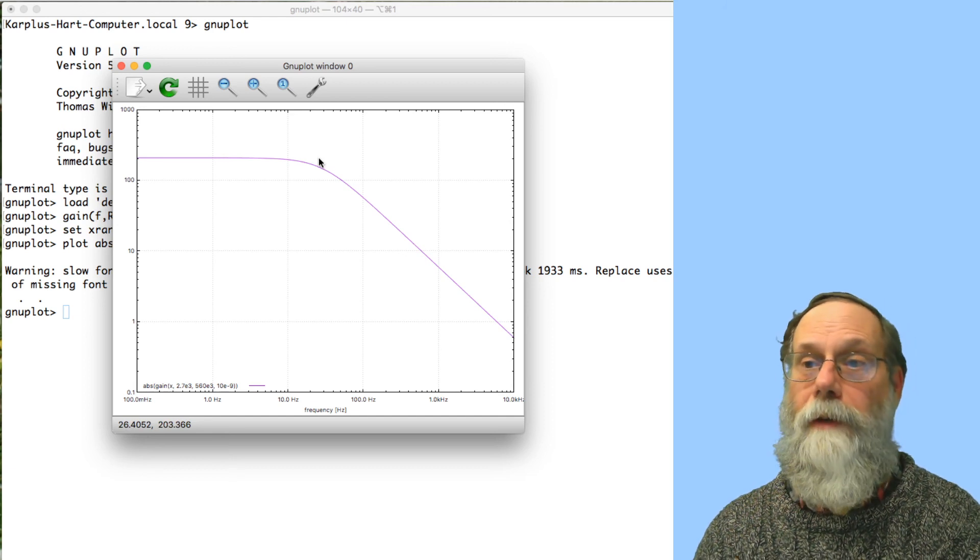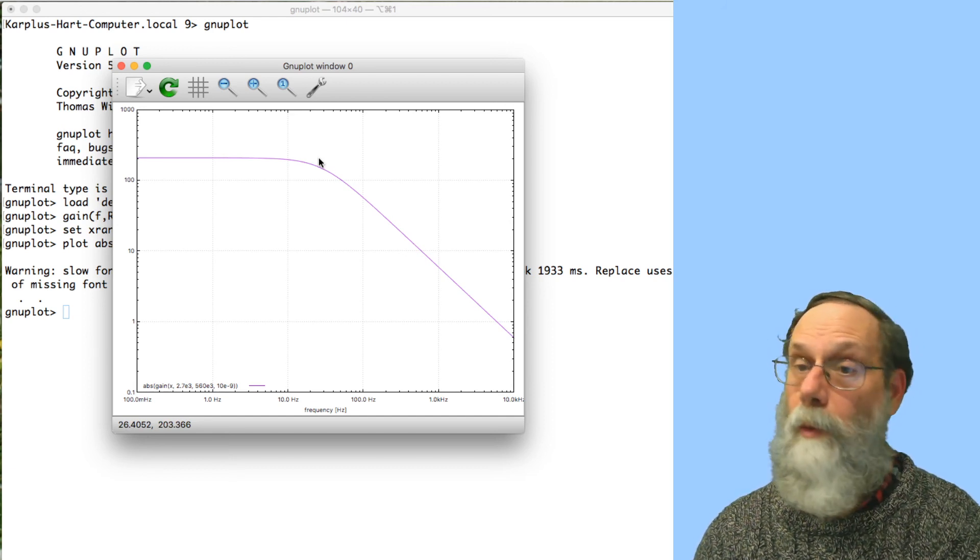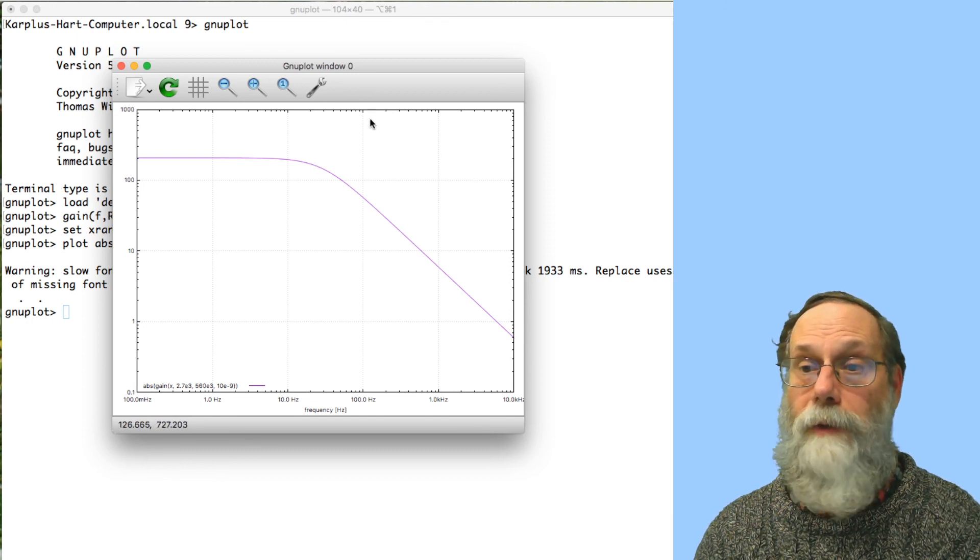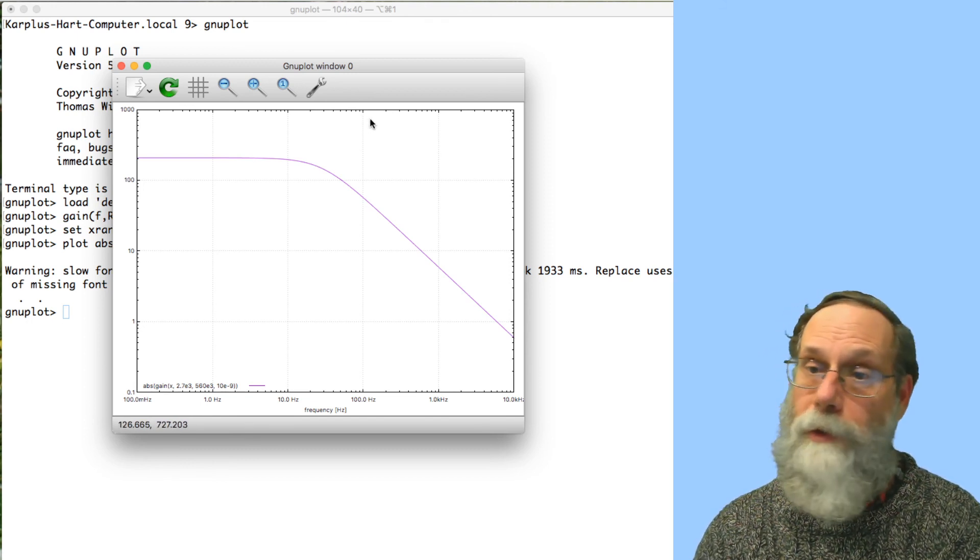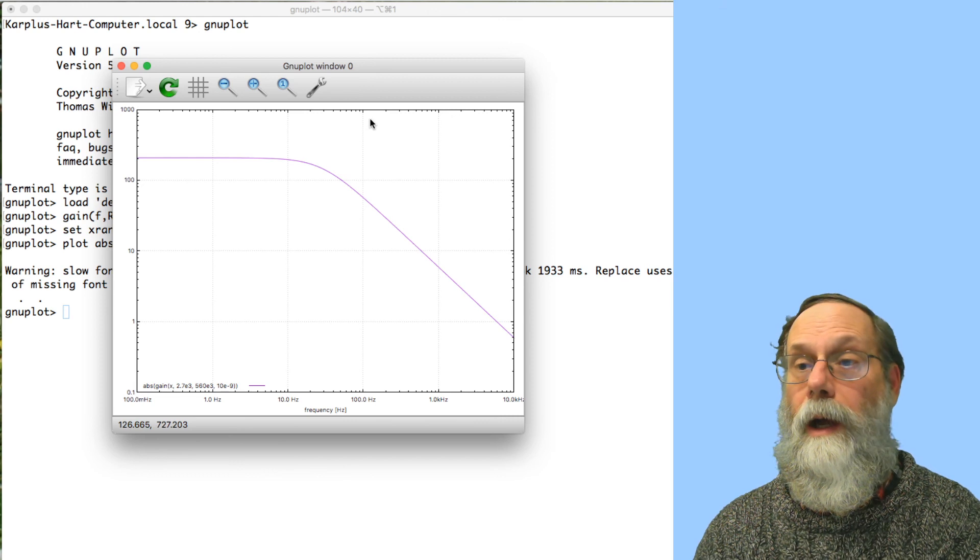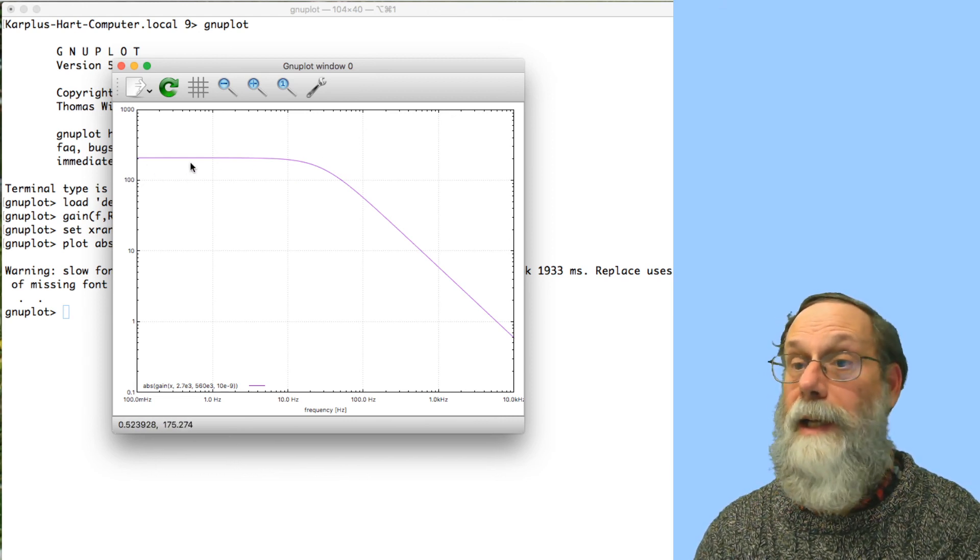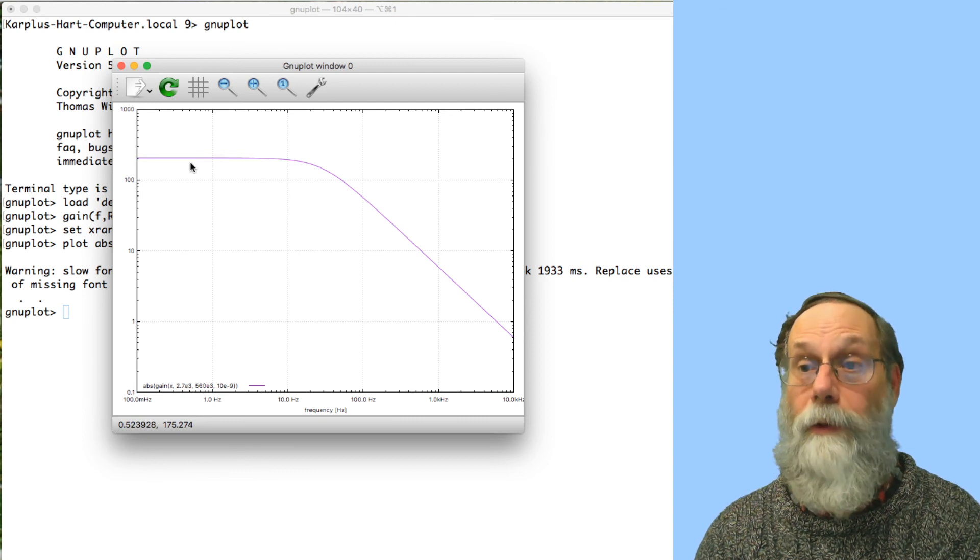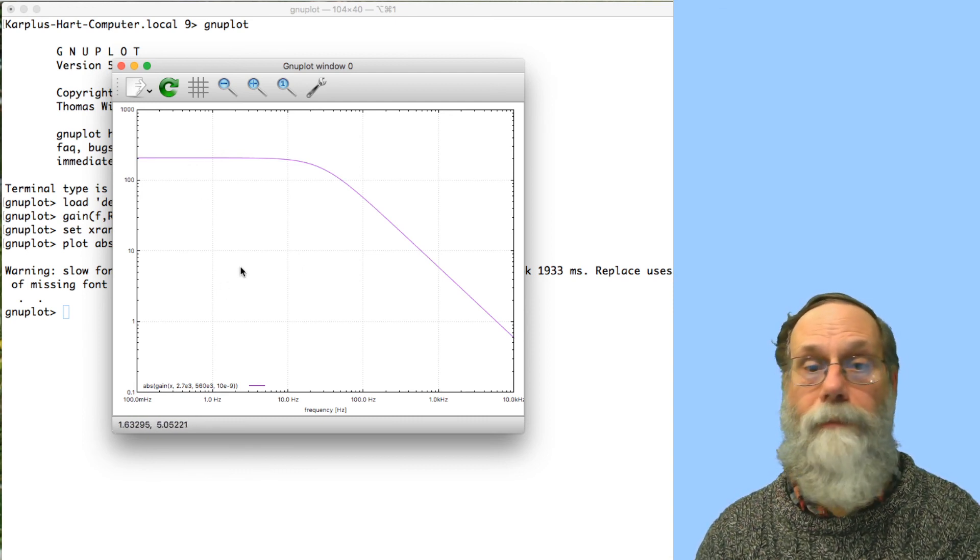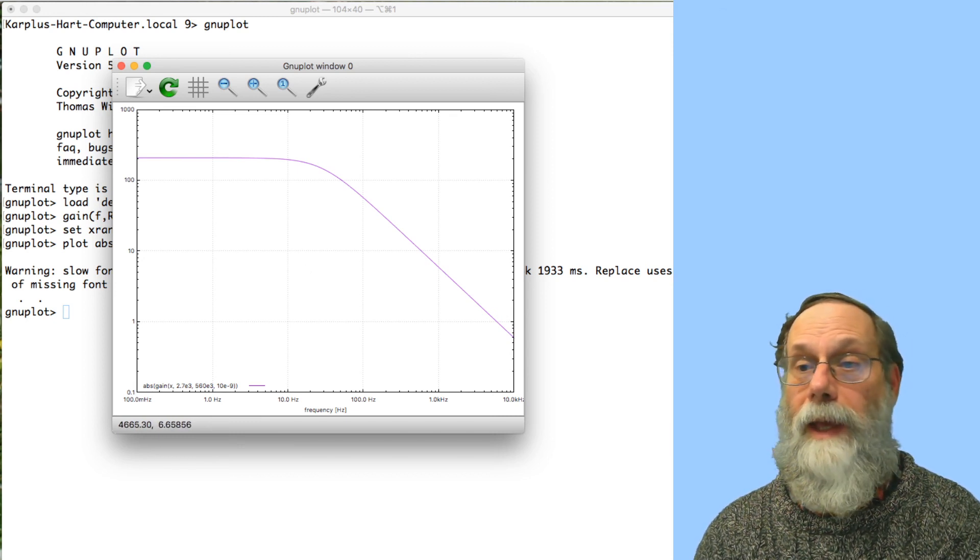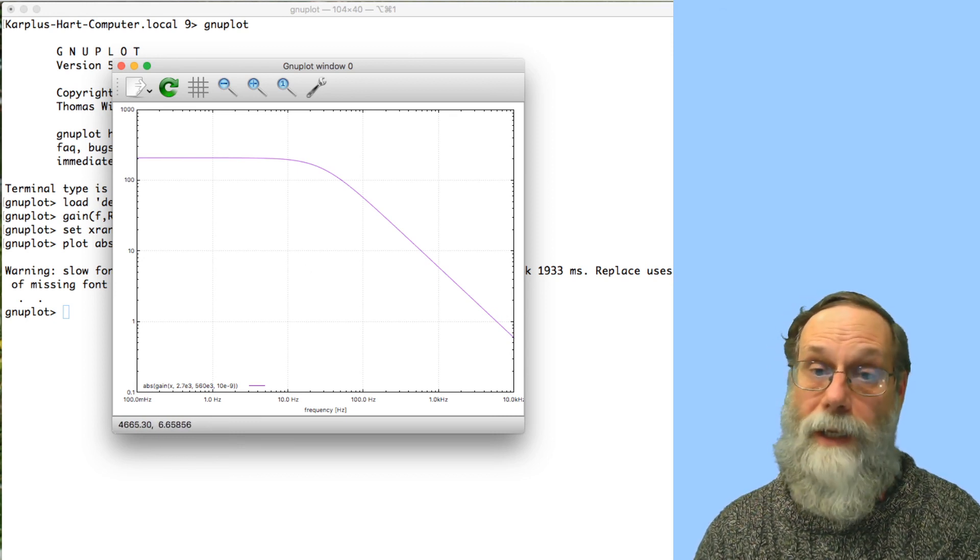This filter does seem to do what we wanted it to do, and as you can see, the design of this filter is no more difficult than the design of a passive filter, but you have one more free parameter that allows you to set a gain to be something other than one as the passband gain. That's one of the big advantages of having an active filter is that you can get gain out of it.